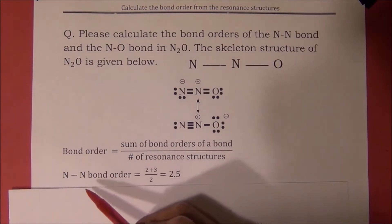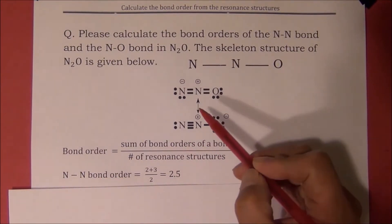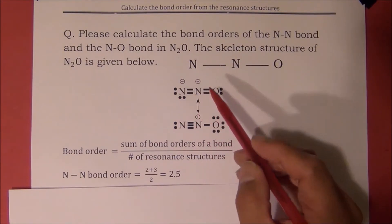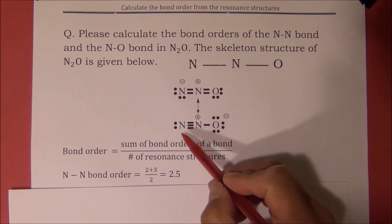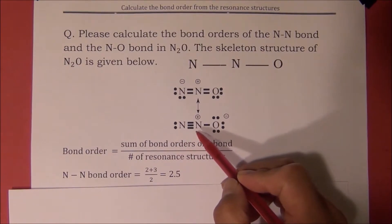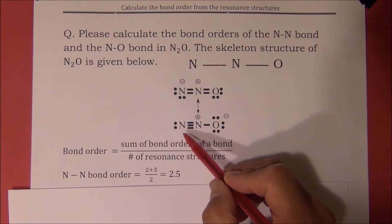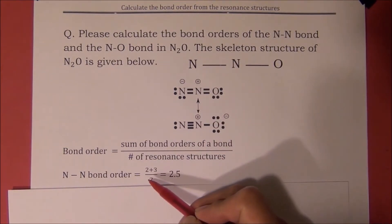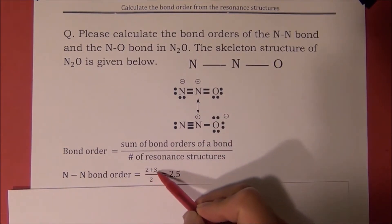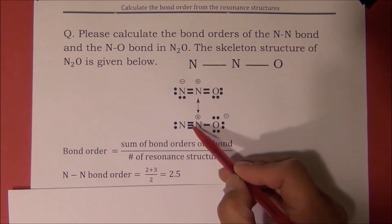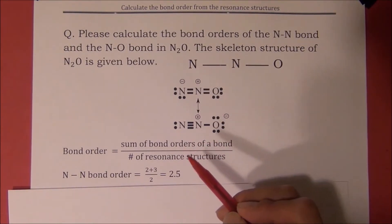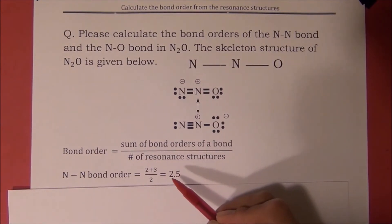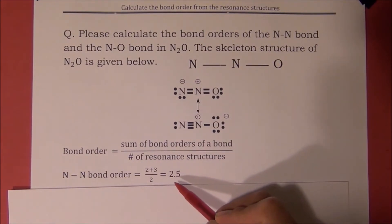To calculate the bond order of the N-N bond, we have to add the bond order of the N-N bond from the first resonance structure and the bond order of the N-N bond from the second resonance structure. The calculation is 2 plus 3, then divide it by 2. The answer for the N-N bond order is 2.5.